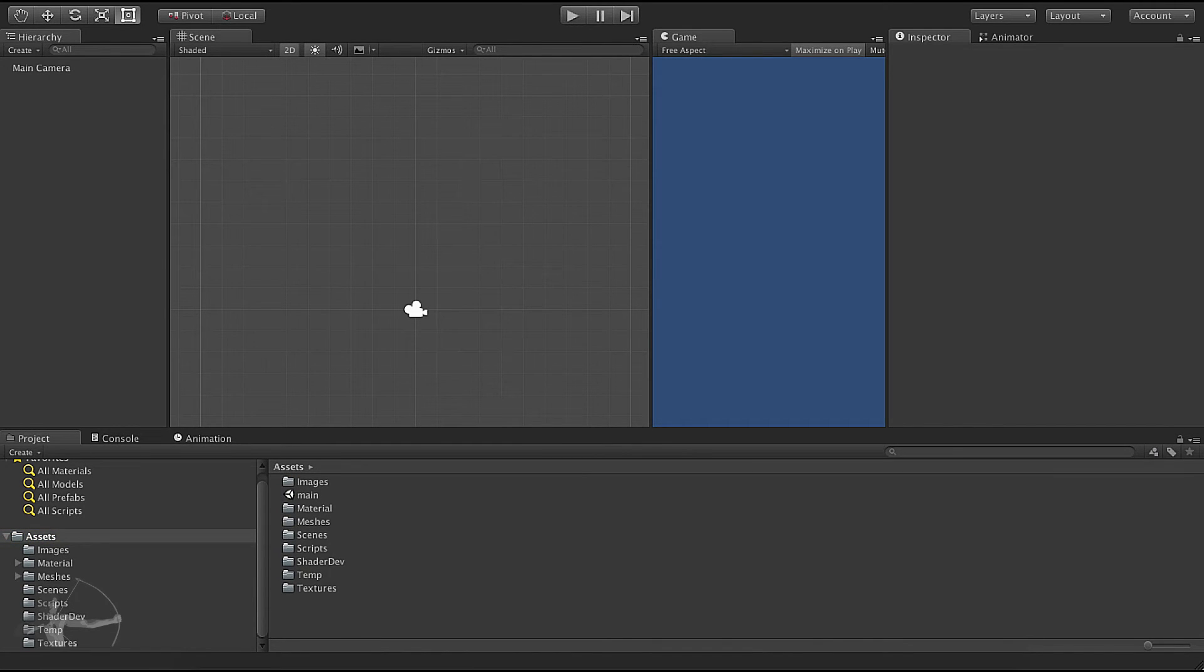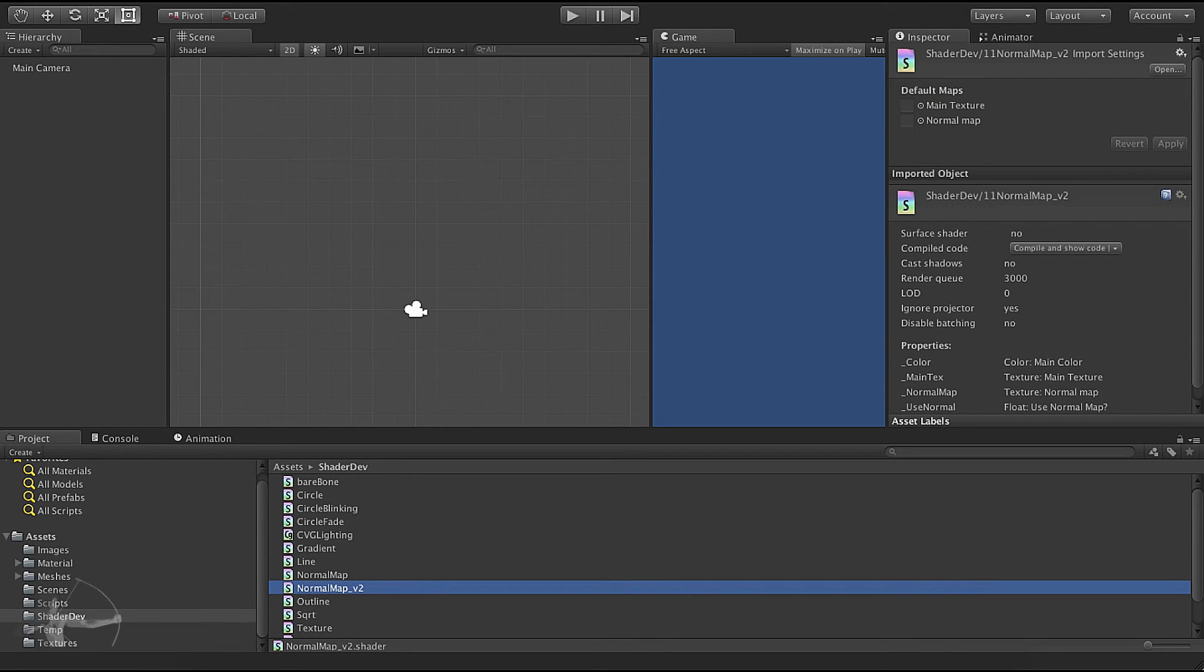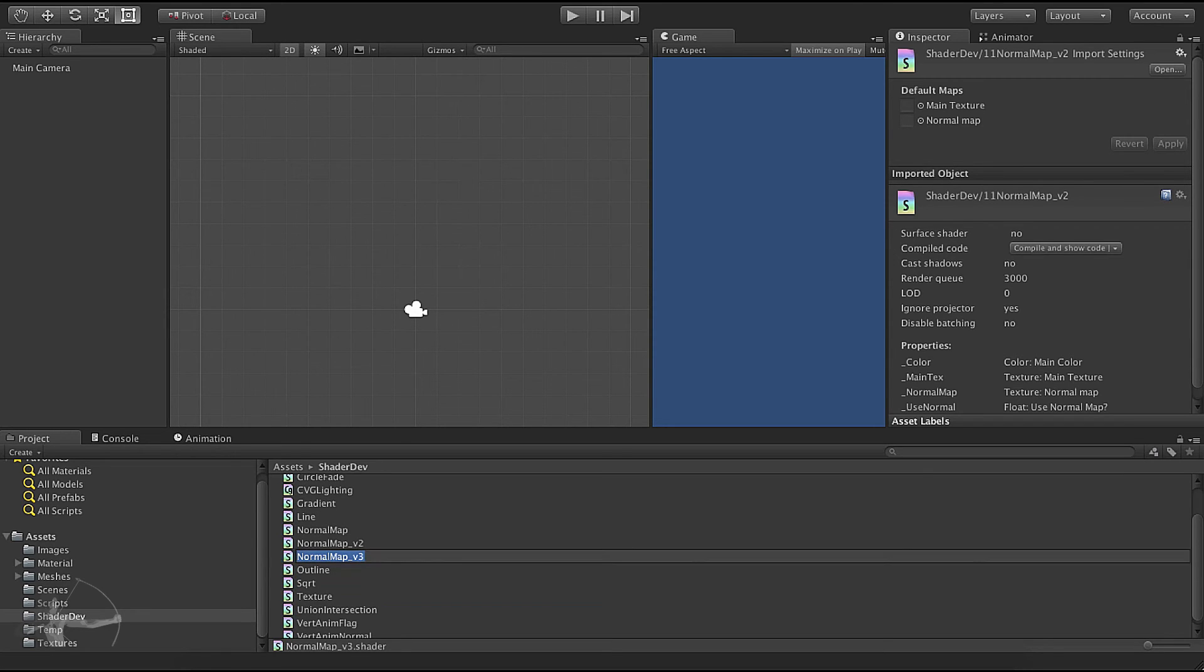So we are in our Unity project. The first thing we will do is we will pick the normal map version 2 shader because that is the point from where we will start extending our shader to have the capability of diffuse reflections.